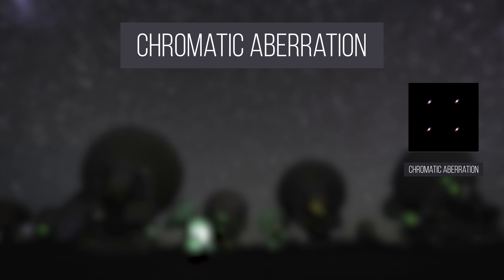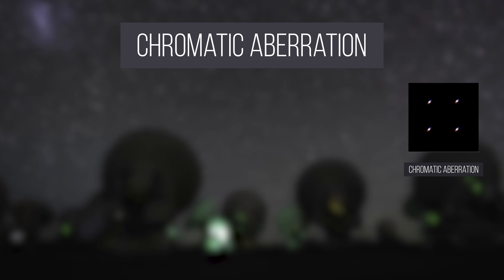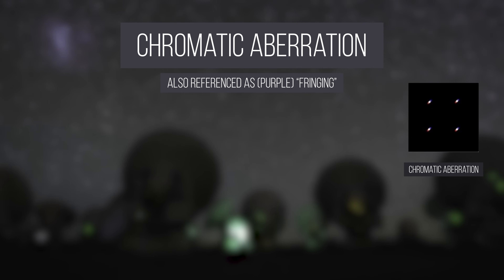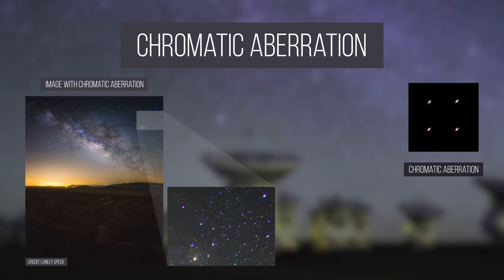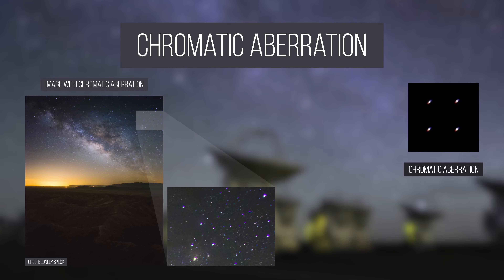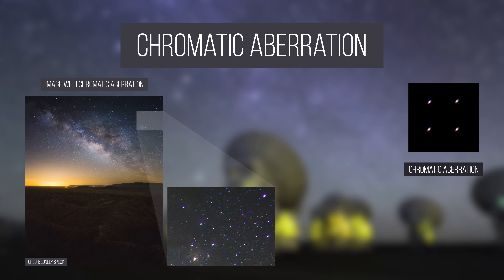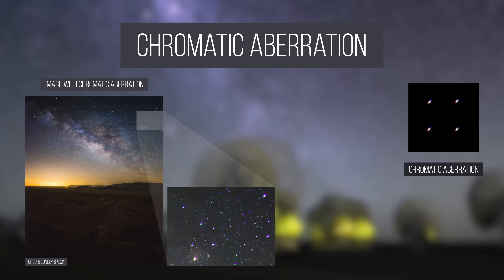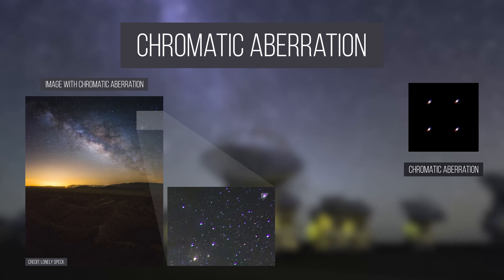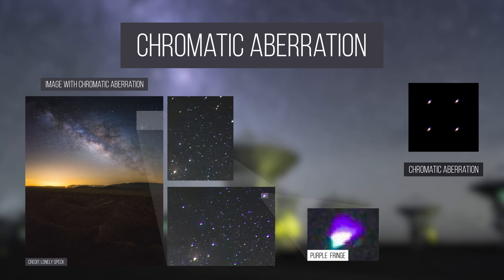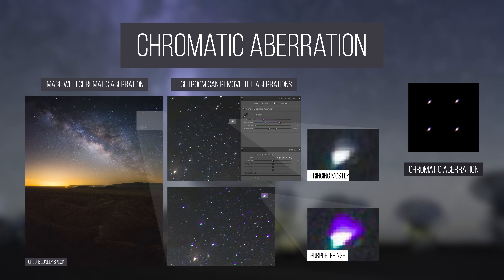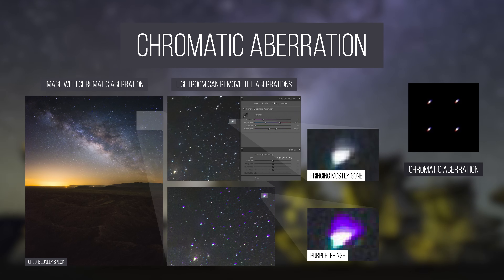Chromatic aberration is a term you've probably heard before. Also known as color fringing or purple fringing, it is a common optical problem that can cause blurry or noticeable colored edges in high contrast situations. And in astrophotography, each star plastered against a black sky is a high contrast situation. White stars can gain a purple halo, which can be very distracting in astrophotos. In Lightroom there is a button to eliminate chromatic aberrations, but it's best to have none in the first place.